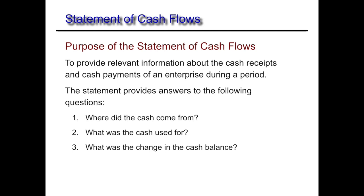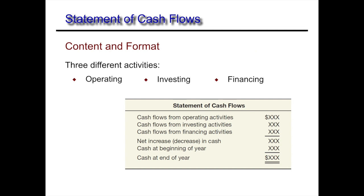The Statement of Cash Flows provides answers to three questions: Where did my cash come from? What was it used for? And what was the change in the cash balance? We know the change in cash balance is found on the balance sheet, but we don't know what created that change — and that's really what the Statement of Cash Flows is showing us. It does that with three different activities: operating activities, investing activities, and financing activities.